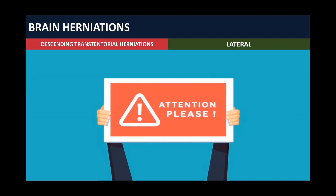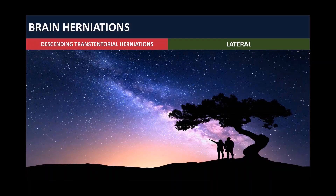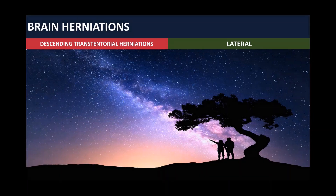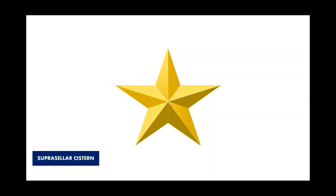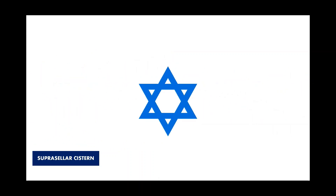Pay attention now — we're going to talk about the most important thing in this lecture. The earliest finding in uncal herniation is the effacement of the suprasellar cistern. Think of the phrase 'look at the stars, look how they shine for you.' The stars here represent the suprasellar cistern. It is more like a Star of David — a six-point star. The key point is that the suprasellar cistern, or the 'star,' will be effaced by the uncal herniation.